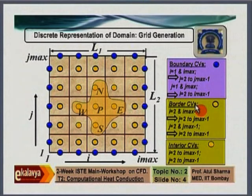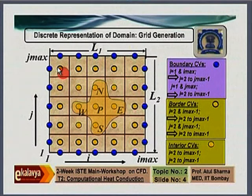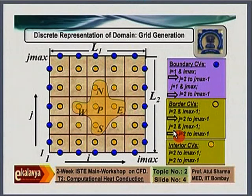A border control volume is an interior control volume at the boundary. For i=2, j varies from 2 to jmax−1 (2 to 6) — those are the left border points. For i=imax−1=6, all j — those are the right border points. For j=2, all i — those are the bottom border points. For j=6, all i — those are the top border points.